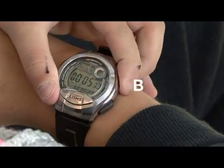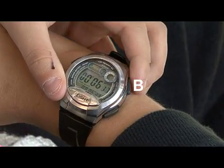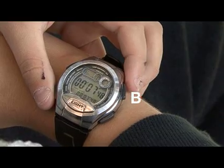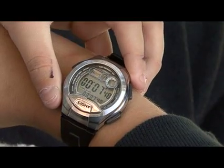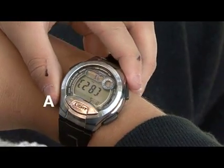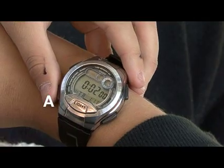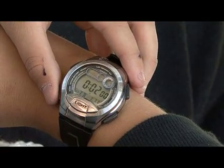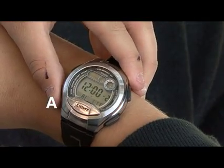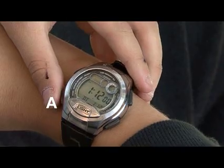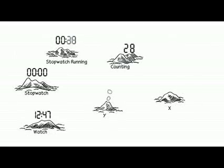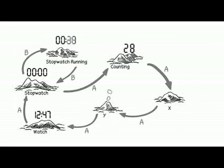Pressing button B will start the stopwatch. Pressing it again stops it. Pressing button A now takes the watch into accounting mode, and three more presses gets us back to the original time display. We could draw a map of this in the same way as the pirate's map in the activity, and it would provide instructions on how to use the watch.